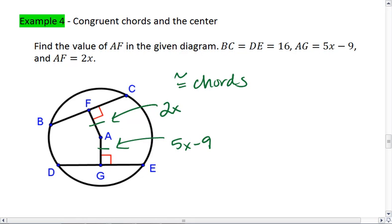Since they're congruent chords, we know the distances are congruent, meaning 2X equals 5X minus 9. So 3X equals 9, X equals 3.